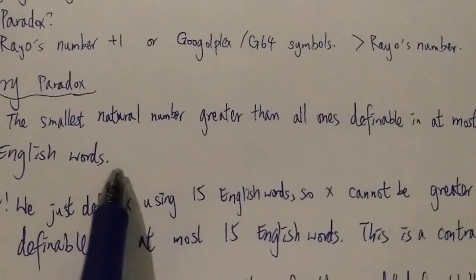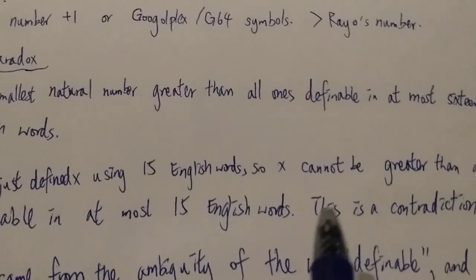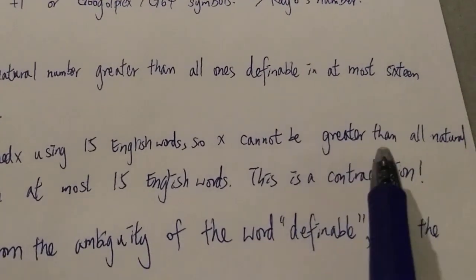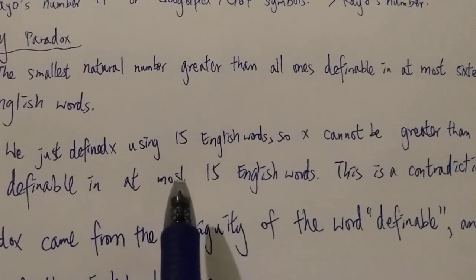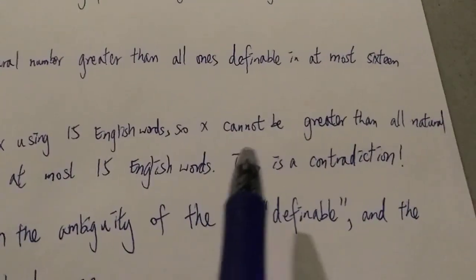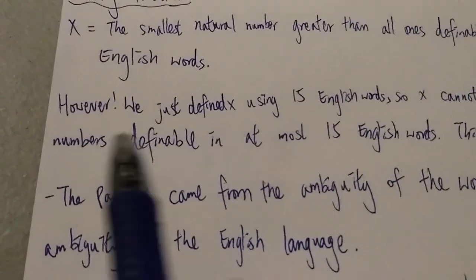So in this sentence there are 15 English words. So X cannot be greater than all natural numbers definable in at most 15 English words. This is a contradiction.